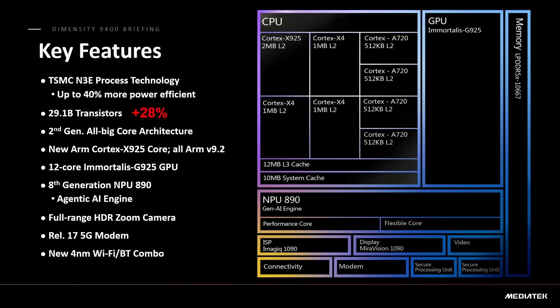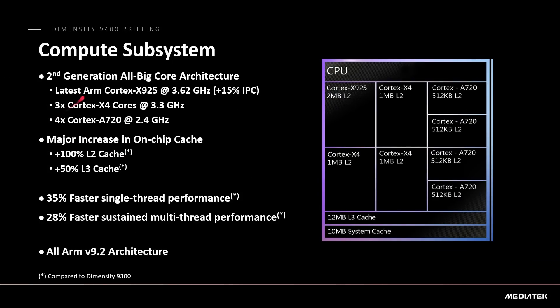When you first look at that you might say it's the same CPU as last year — they've just changed one core and upgraded the GPU. Yes, that's true, but it's a bit more nuanced than that. There are no Cortex-A520 efficiency cores; it's all big cores. They're all running much faster because of the new process node. The X925 frequency is 11% higher than the X4 prime core in the 9300, the remaining X4 cores run at 15% higher clock speed, and the A720s run at 19% higher clock speed — big clock speed increases across the board.